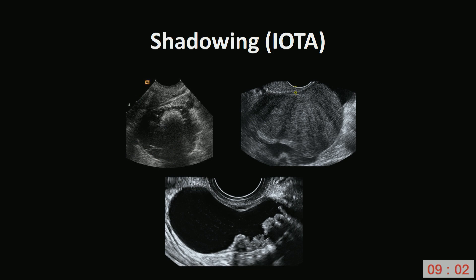These are examples of shadowing. We can have shadowing behind the white ball of hair and sebum in a dermoid cyst, fan-shaped shadowing in a fibroma, and shadowing behind papillary projections in a serous cyst adenofibroma.